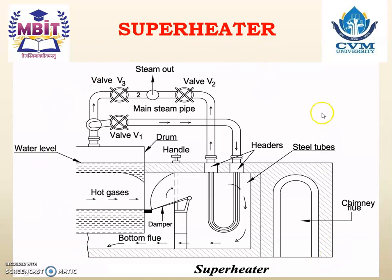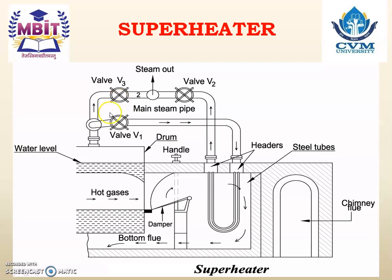Superheater. This is the case for the superheater and the superheater is located here. This one is the boiler and this is the steam stop valve V1. Whatever the steam is generated in a boiler, it is taken to the superheater through valve V1. In the superheater, steam is converted into superheated steam — the steam is heated again. Whatever superheated steam is available is taken out using valve V2. If we don't require superheated steam, then the steam is directly taken out using valve V3, and in that case valve V1 is closed.